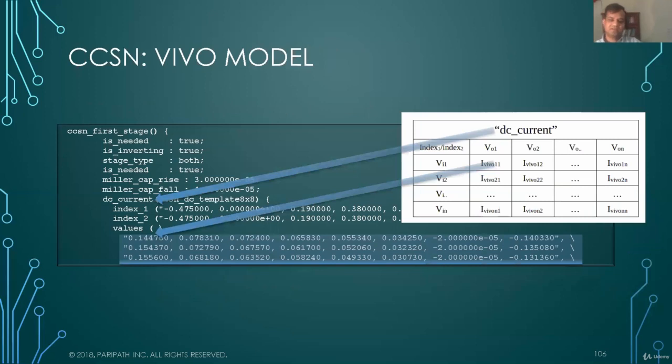And this looks like what's shown on the slide. It's a simple table with an index of VI and V0 with different values. And the table captures the values in the table capture current. The slide shows the Liberty format for VIVO model.